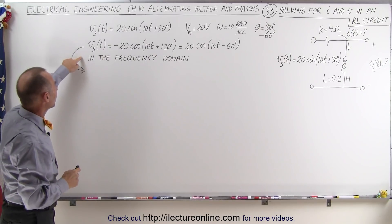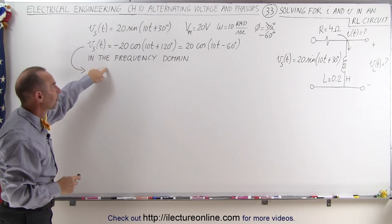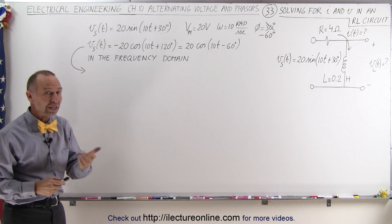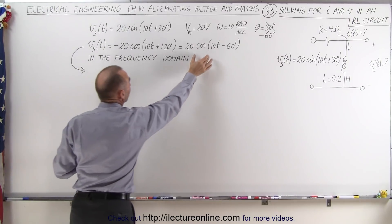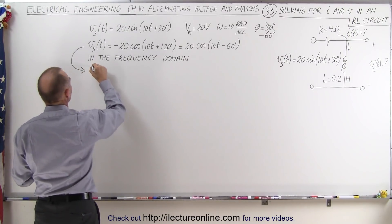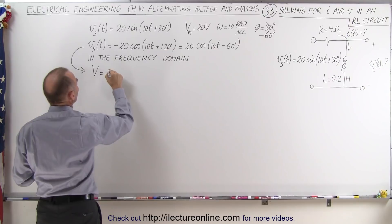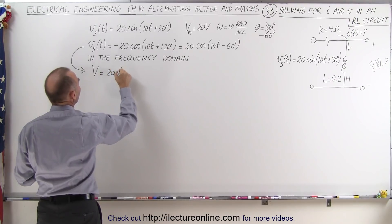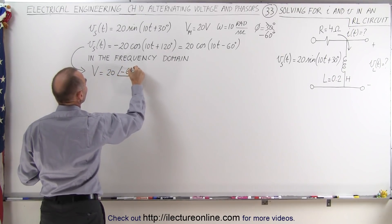The first thing we're going to do is take the source voltage and convert it into the frequency domain. Now that we have it as a cosine function, we can say that V is equal to the magnitude 20 at a phase angle of minus 60 degrees.